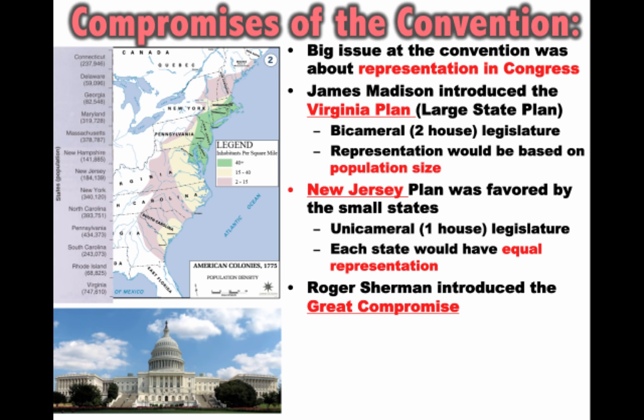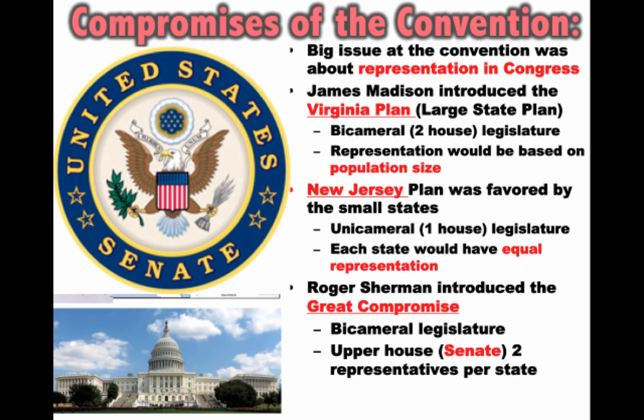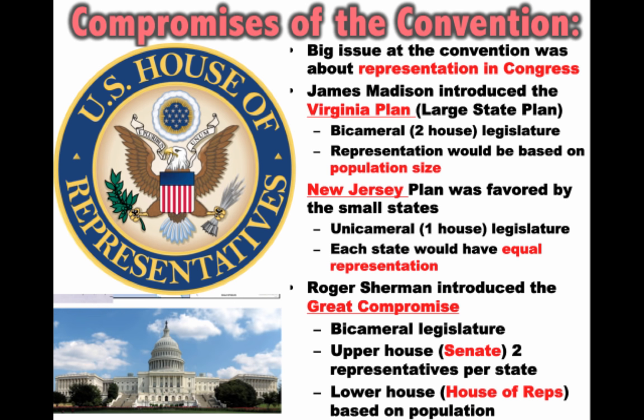There was a lot of tension over this issue, but luckily there was a compromise — the Great Compromise, introduced by Roger Sherman, sometimes called the Connecticut Plan. They took elements of both plans: a bicameral legislature with an upper house, the Senate, giving two representatives per state regardless of size, and a lower house, the House of Representatives, where representation would be based upon population — the more people living in the state, the more representatives you'd elect.